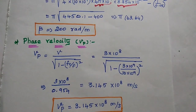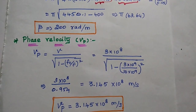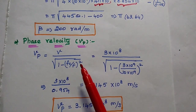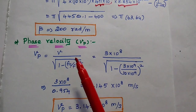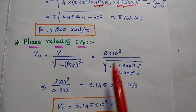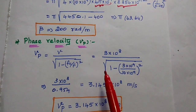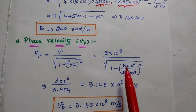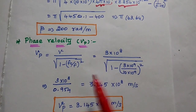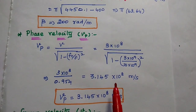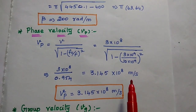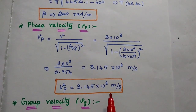The phase velocity vp equals v by square root of 1 minus fc by f, the whole squared. Substituting v as 3 into 10 to the power 8 for air medium, and the cutoff frequency as 3 into 10 to the power 9 (3 gigahertz) with operating frequency 10 gigahertz, the answer is 3.145 into 10 to the power 8 meter per second.